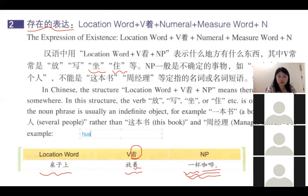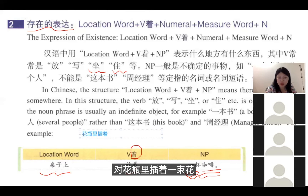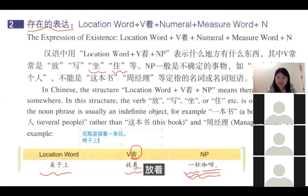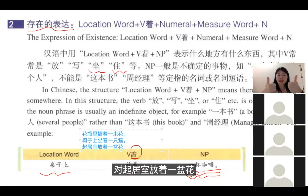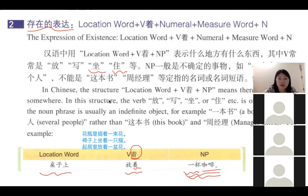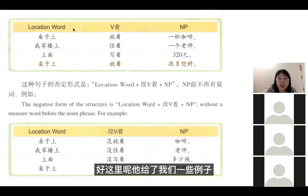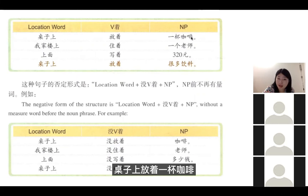花瓶里插着一束花。椅子上放着一只猫？——应该是椅子上坐着一只猫。起居室放着一盆花。这些都是存在句的例子。